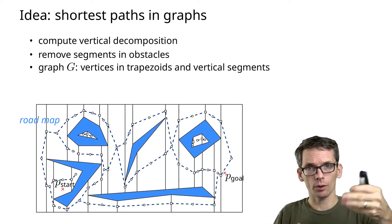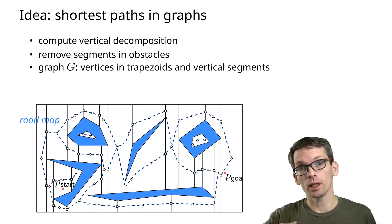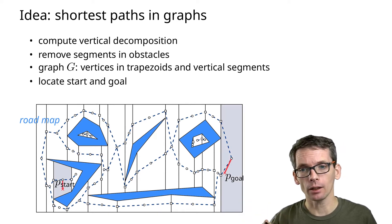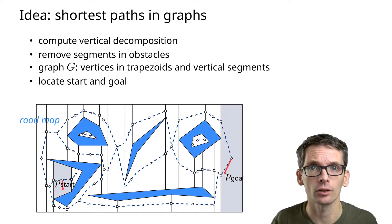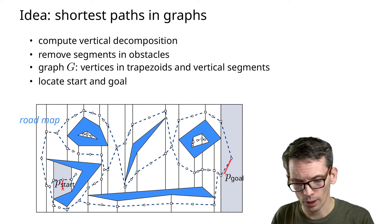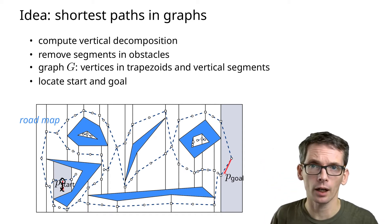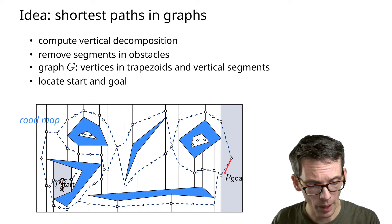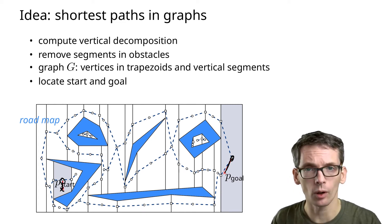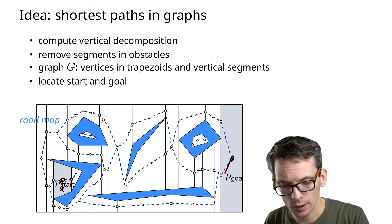Such a graph — a graph on which you let the robot navigate — is called a roadmap. Now we need to locate the trapezoid that contains the start and the trapezoid that contains the goal position. The robot moves to the vertex of the face containing the start, and eventually if it finds the trapezoid containing the goal it can easily move to the goal. We just need to find the shortest path in the graph from the start vertex to the goal vertex.